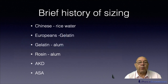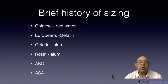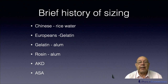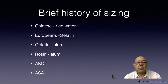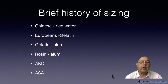A little brief history of sizing. It started off with the Chinese trying to use rice water, but that really didn't work very well. Europeans had a great idea — we did sizing using animal gelatin. It was a bit soft so we came up with another system: gelatin alum. Then we moved on to rosin alum, which dominated the world for so many years. And from there we moved on to AKD — alkyl ketene dimer.